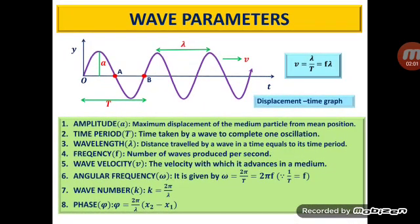In order to describe a wave, we require certain parameters. The parameters used to define a wave are amplitude, time period, wavelength, frequency, wave velocity, angular frequency, wave number, and phase. The maximum displacement of the medium particle from its mean position is called amplitude. The time taken by a wave to complete one oscillation is called its time period. The distance travelled by a wave in a time equal to its time period is called its wavelength. The number of waves produced per second is called wave frequency.